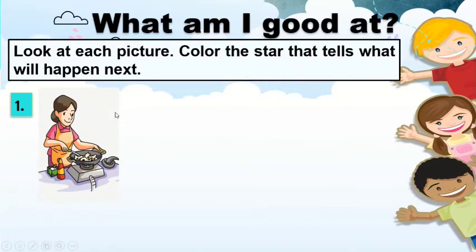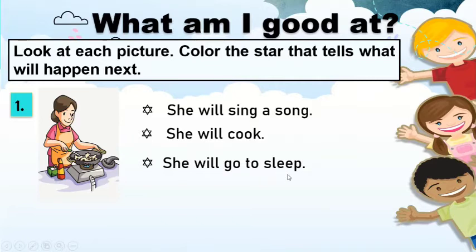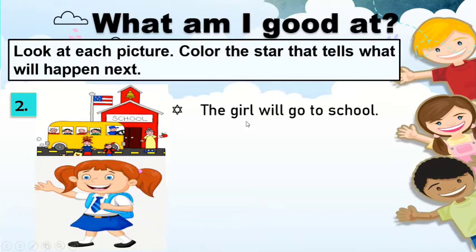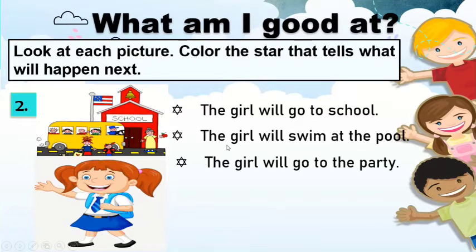Number 1. Look at this picture. Do you think she will sing a song? She will cook? She will go to sleep? What is the correct answer? Very good! The correct answer is she will cook. Number 2: The girl will go to school. The girl will swim at the pool. The girl will go to the party. Correct! The answer is the girl will go to school.